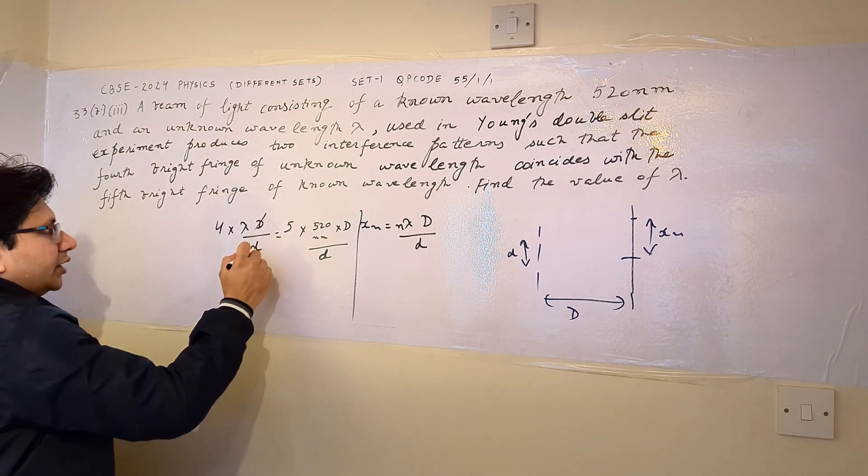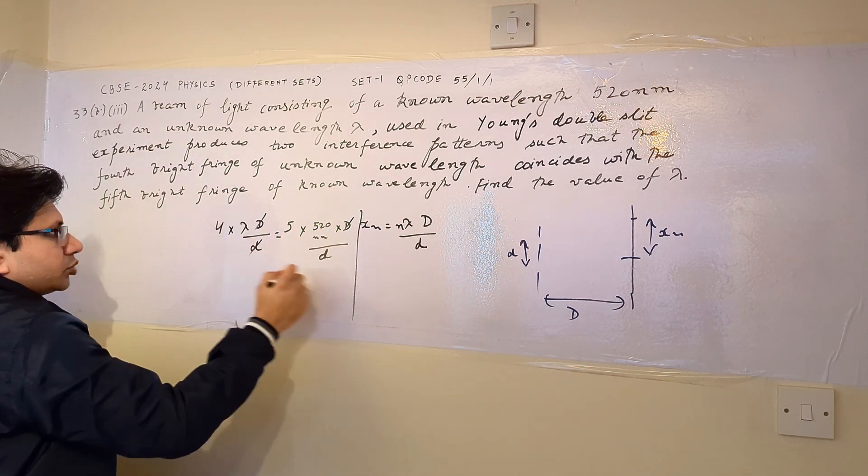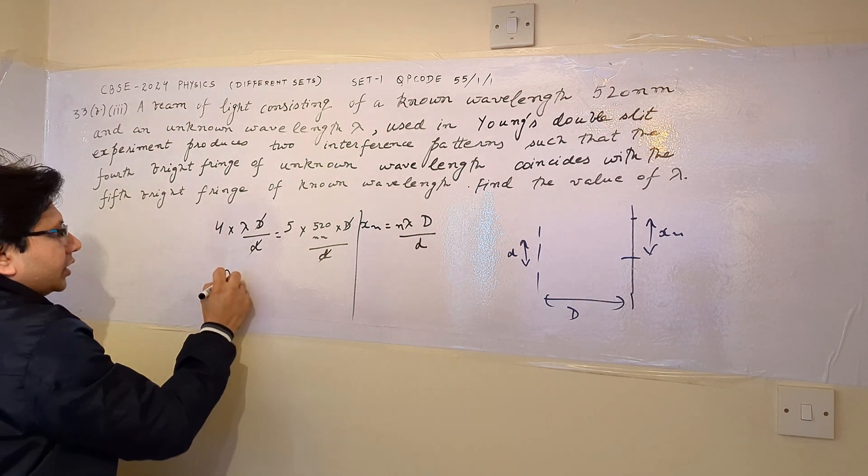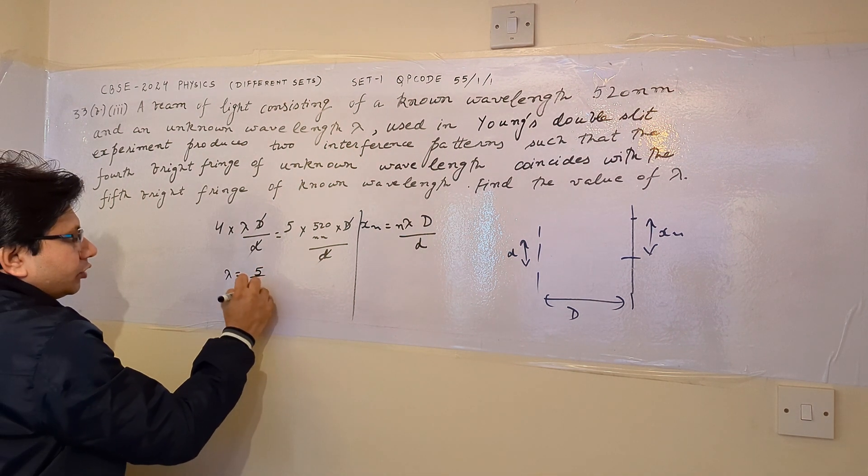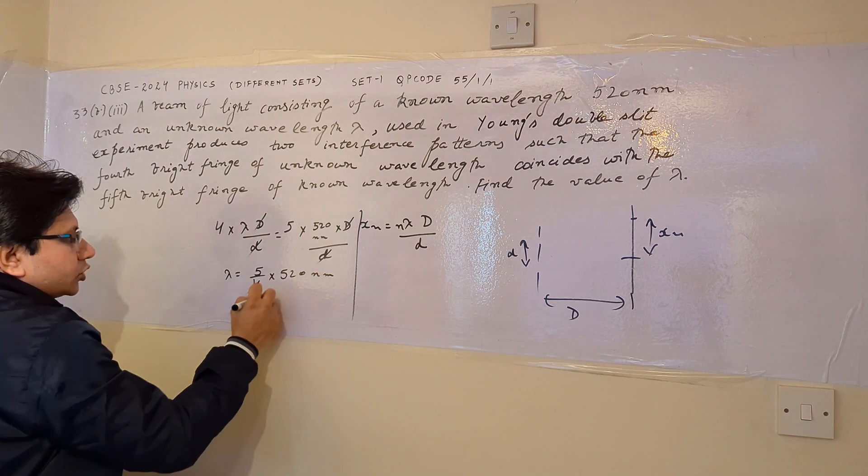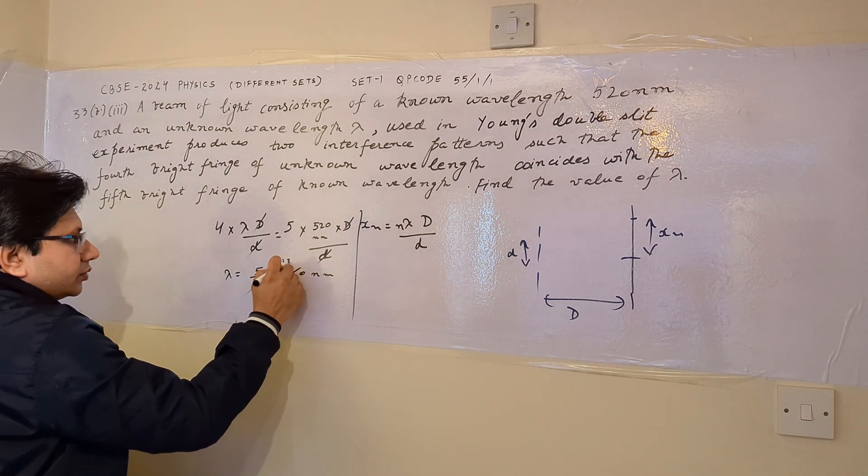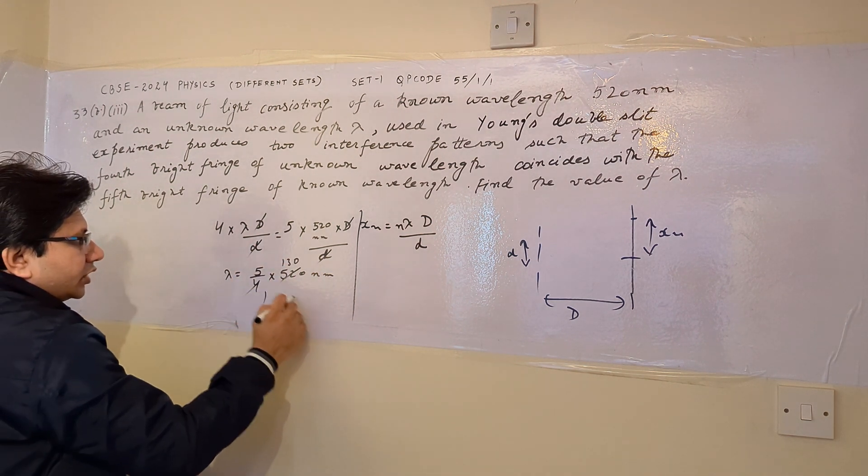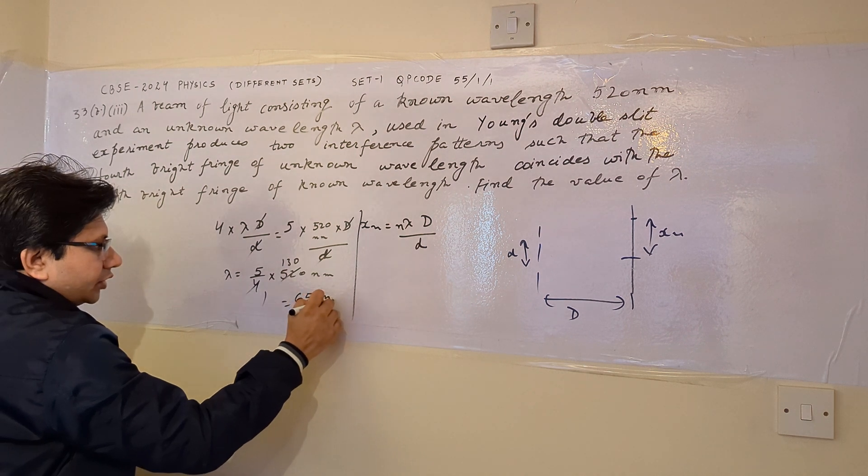So this capital D cancels with this capital D and lambda comes out to be 5 upon 4 multiplied by 520 nanometers. So 4 cuts with this, then 130, 130 into 5 is 650 nanometers.